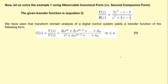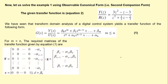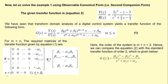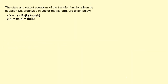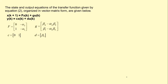For the observable canonical form, we again compare the given transfer function to the standard second order transfer function. The required matrices of the state space model through the observable canonical form are F, G, C, and D matrices. On comparing, we get the same coefficients: beta naught = 3, beta one = −1, beta two = −3, alpha one = 1/3, and alpha two = −2/3.